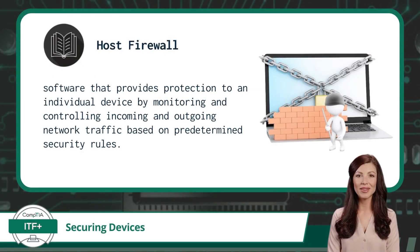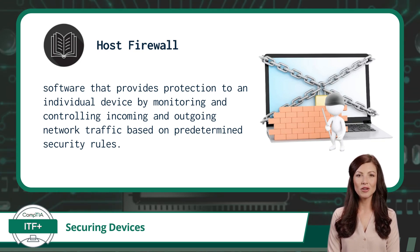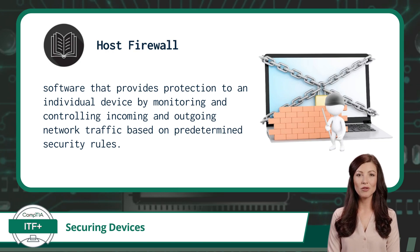With an up-to-date antivirus and anti-malware in place, the next component used in securing a device is a host firewall. This is another type of software installed on a device. Its job is to provide protection by monitoring and controlling incoming and outgoing network traffic based on predetermined security rules. By filtering this traffic, a firewall can ensure that harmful data packets are blocked while safe ones are allowed through. These rules can block an unsafe protocol like Telnet or open a specified port number for approved traffic.